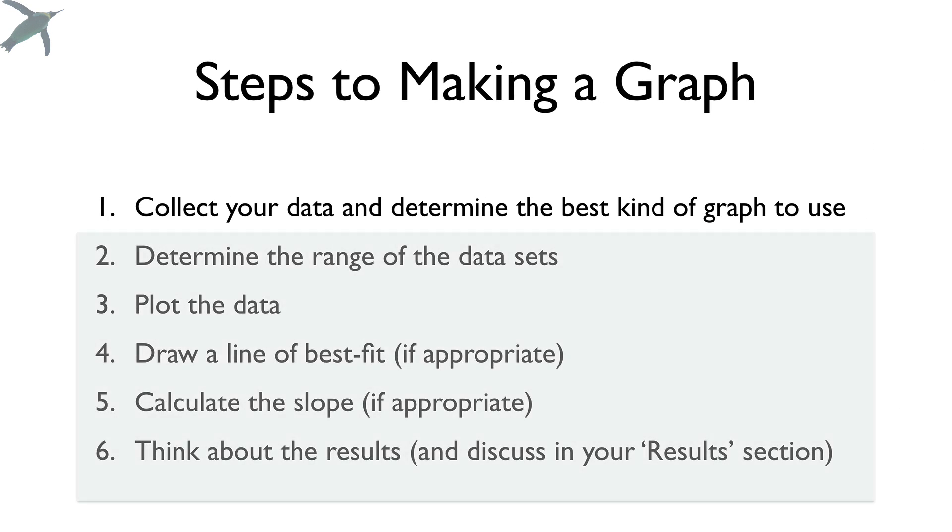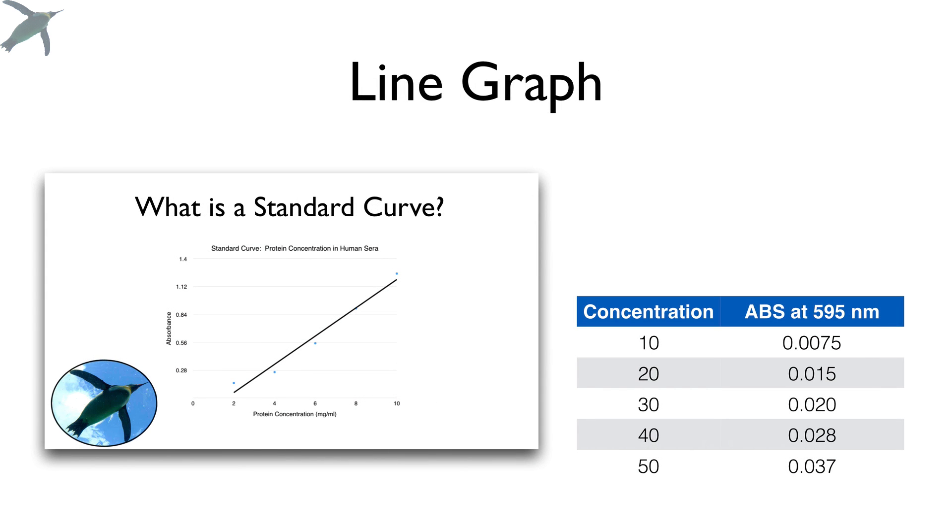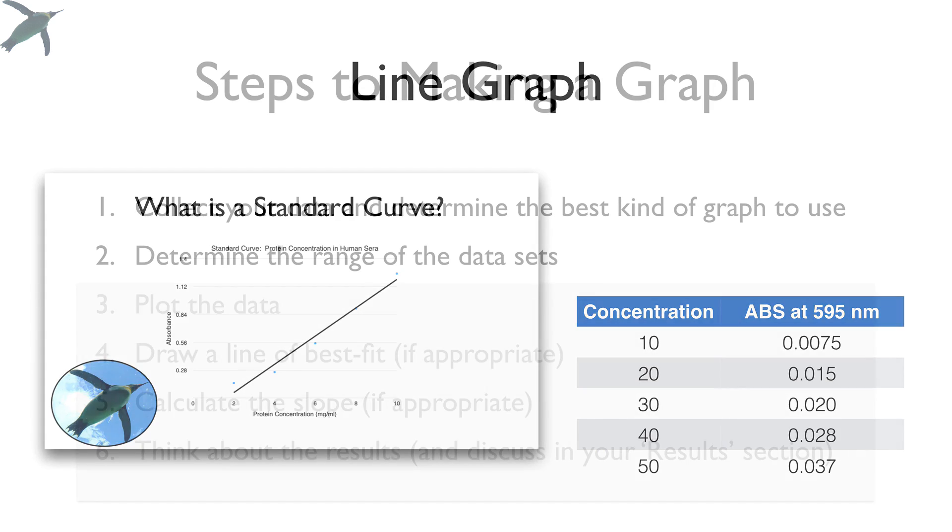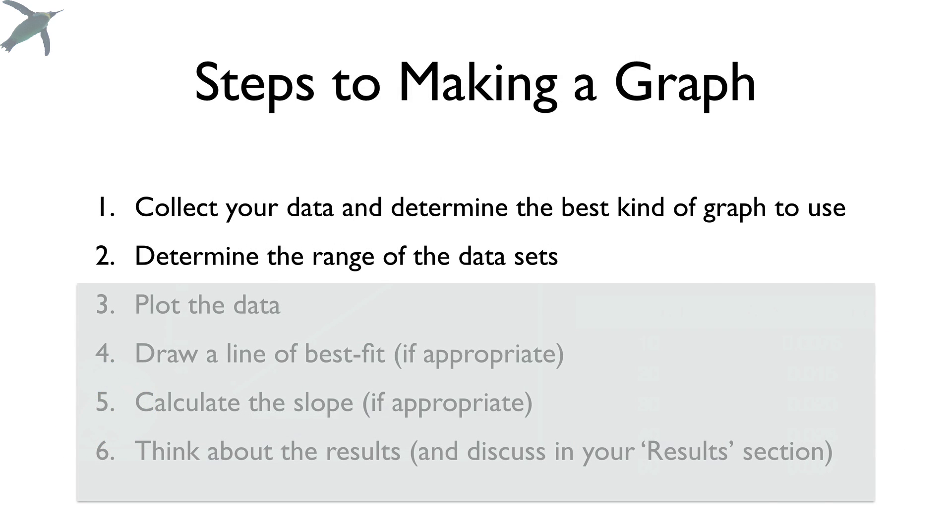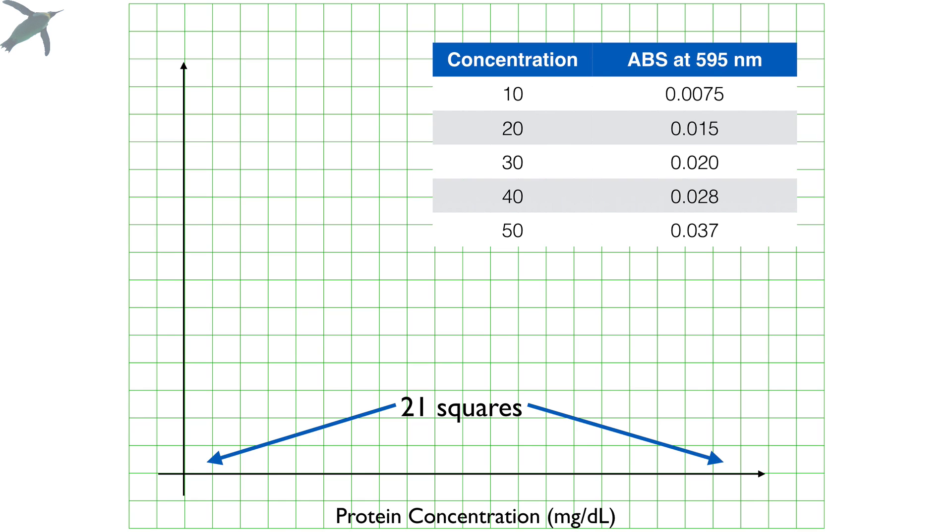How to make a graph. The first thing you're going to do is collect the data and determine the best kind of graph to use. So I am going to be graphing the data from the what is a standard curve video. If you want to see that, I'll go ahead and put that link below. We're going to determine the range of the data sets. So you need to look at the data that you have and then look at the space that you have on the graph. So on this particular graph, I've got 21 squares and I'm going to plot the concentration from 0 to 50 just because that is more convenient. So I'm going to consider my range 50 milligrams per deciliter. I've got 20 squares that I want to use. And if I do that division, I get 2.5 milligrams per deciliter per square. So that's what each square represents.